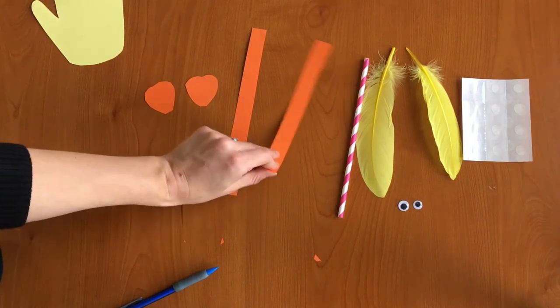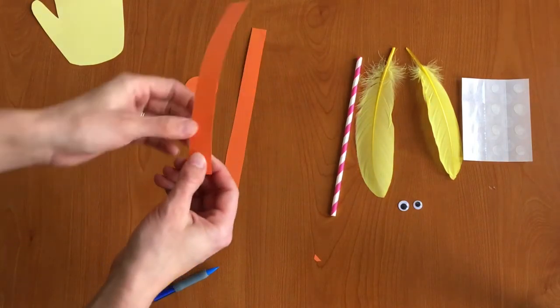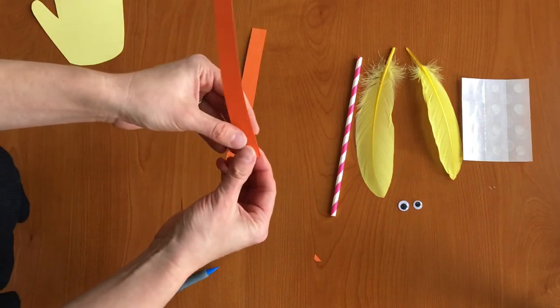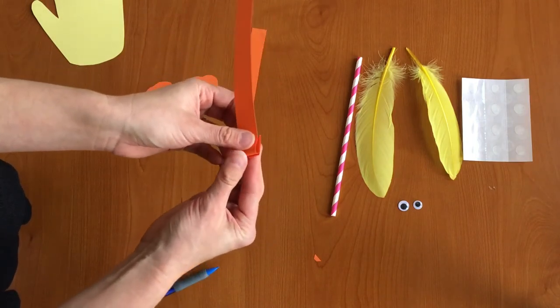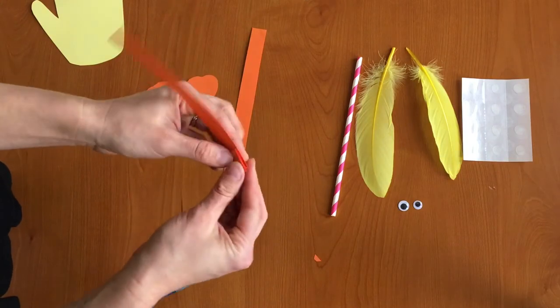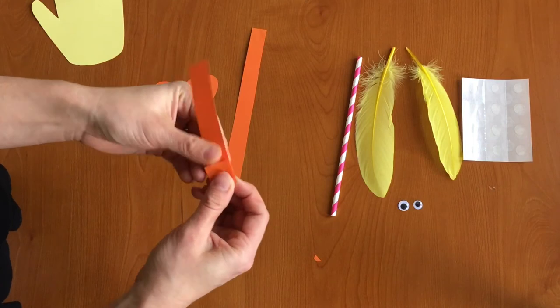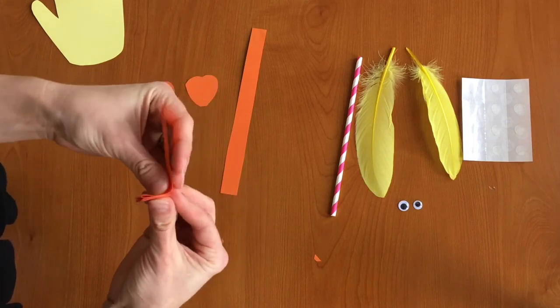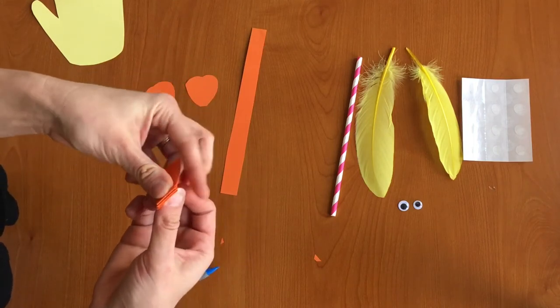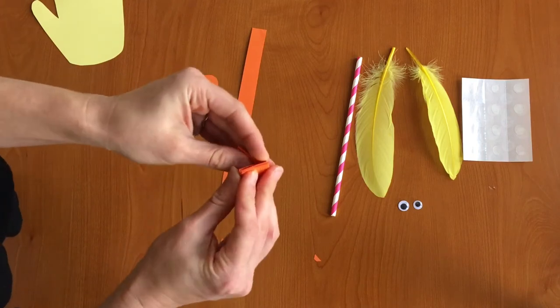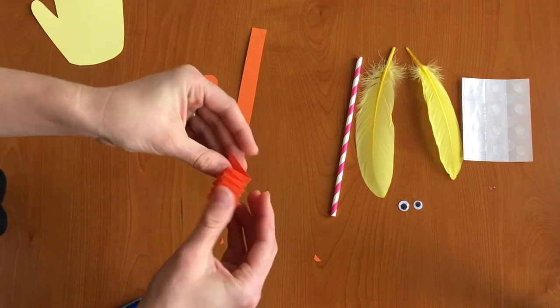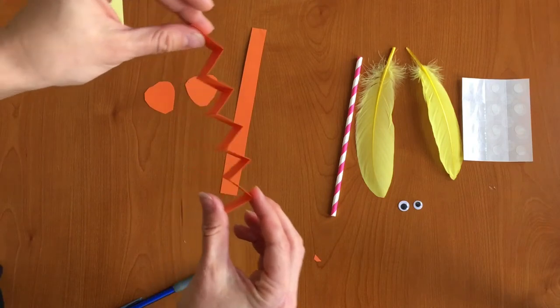Next you want to accordion fold the long orange strips back and forth to make bouncy chick legs. So we're just going to fold back and forth. Once you have your legs all folded back and forth, see how they're nice and zigzaggy and bouncy now?